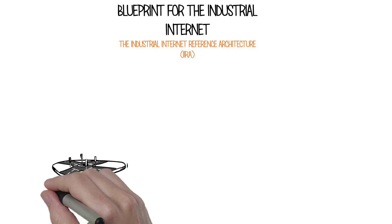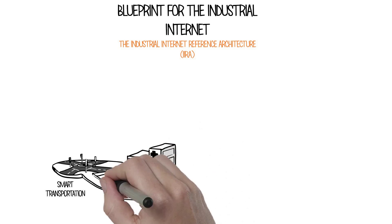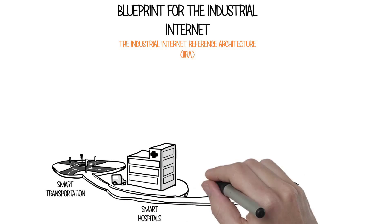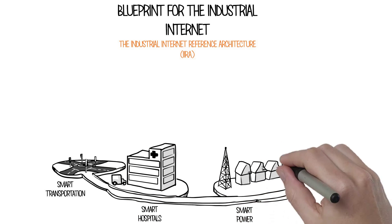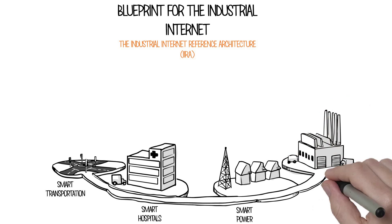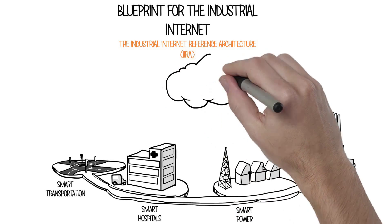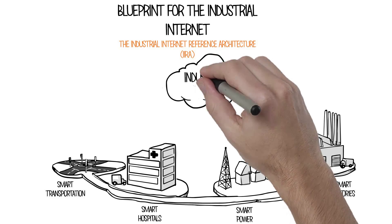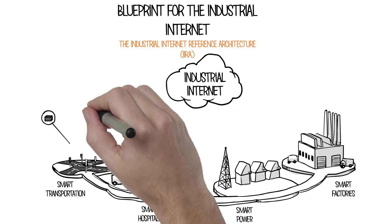Intelligence and connectivity are moving into the sensors, actuators, and devices in applications across energy, healthcare, manufacturing, transportation, and more. Combined with internet protocols, fog computing, and the cloud, we now have the industrial internet of things.